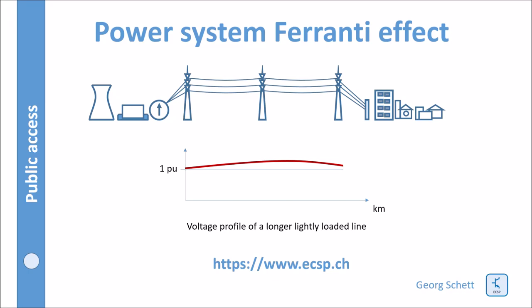In this tutorial, let's talk about the Ferranti effect. The Ferranti effect is a voltage increase along a power line at low load conditions. It starts to be significant at line lengths well above 100 kilometers and can reach well above 50 percent on very long lines. Countermeasures have to be taken to avoid damage to equipment such as transformers, breakers, or other devices.